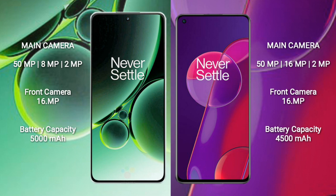OnePlus Nord 3 has a rear triple camera setup: 50MP plus 8MP plus 2MP, and a front camera of 16MP. OnePlus 9RT has a rear quad camera setup: 50MP plus 16MP plus 2MP, and a front camera of 16MP.